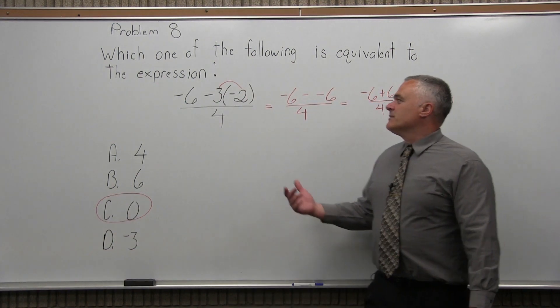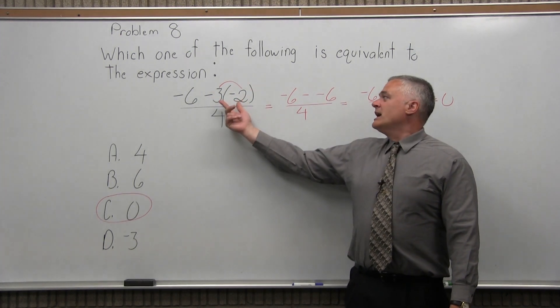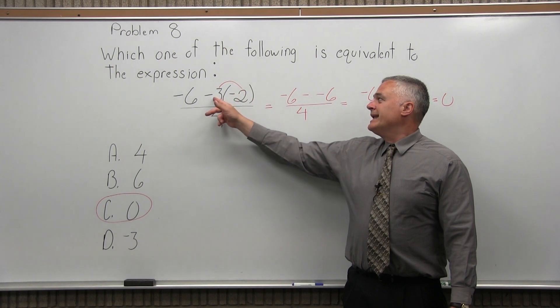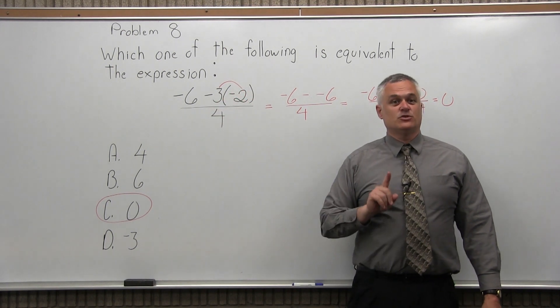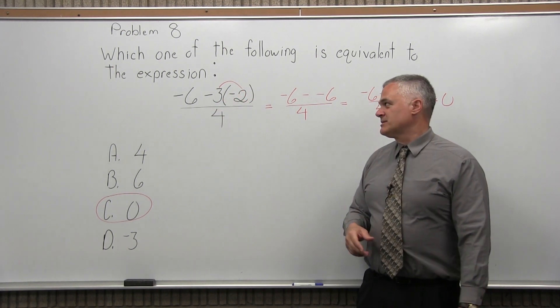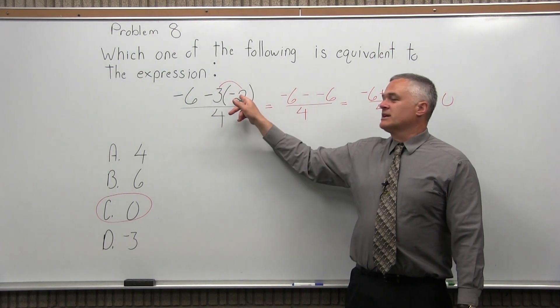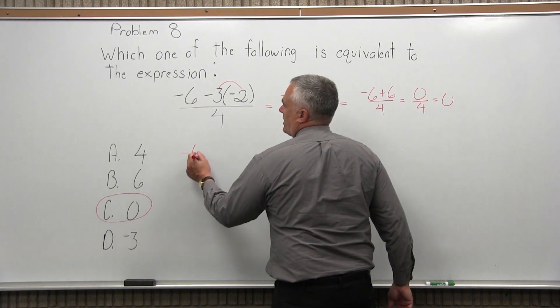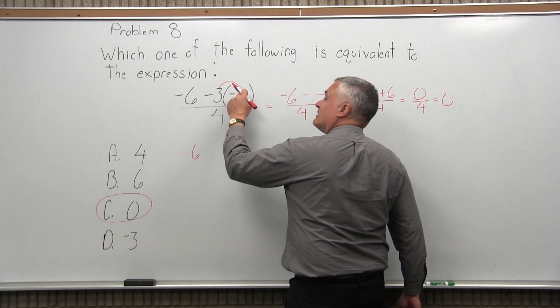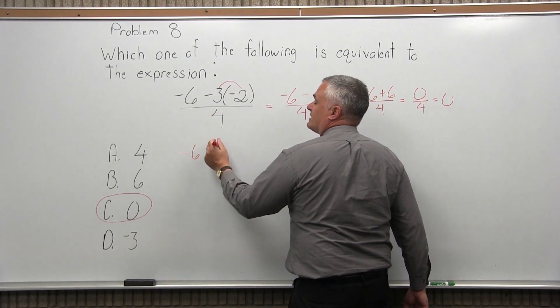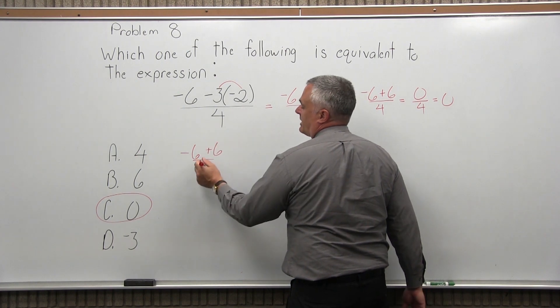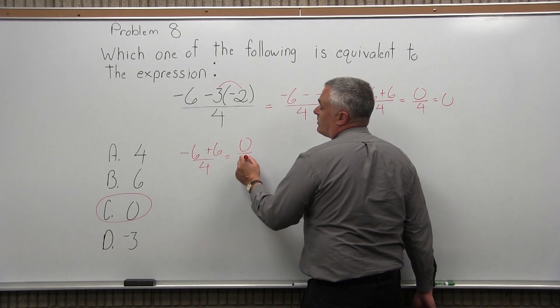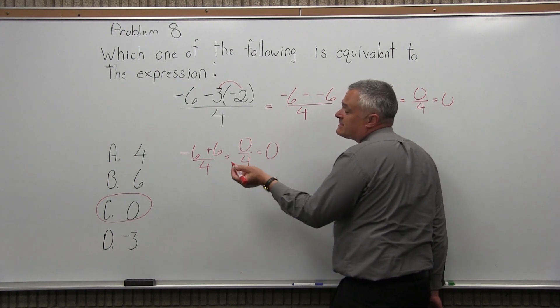Now remember in the beginning, I had said you want to get one number in the numerator. And are you thinking of this as 3 times negative 2, or a negative 3 times negative 2? And I said you should be able to do it either way and get the same answer. Let's do a negative times a negative, and you're going to get a positive 6. What then? So this negative 6 is in front. Negative 3 times negative 2 is positive 6. You still have the 4 in the denominator. And now negative 6 plus 6 is still 0 over 4, which still reduces to 0. So it's still the same answer.